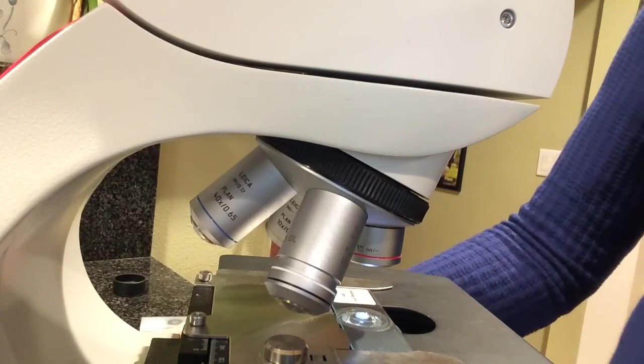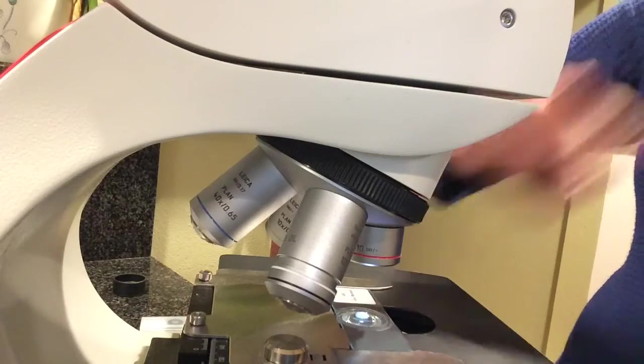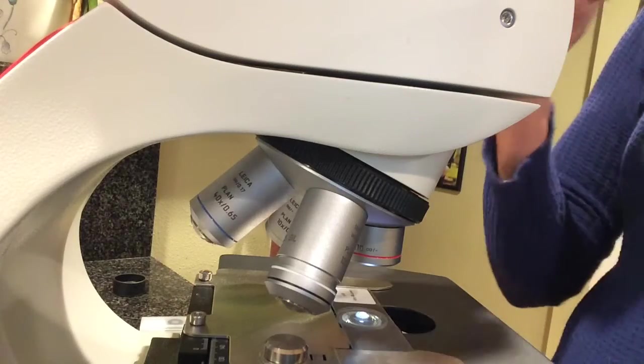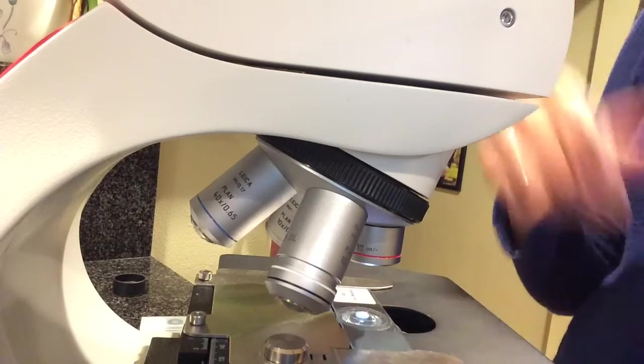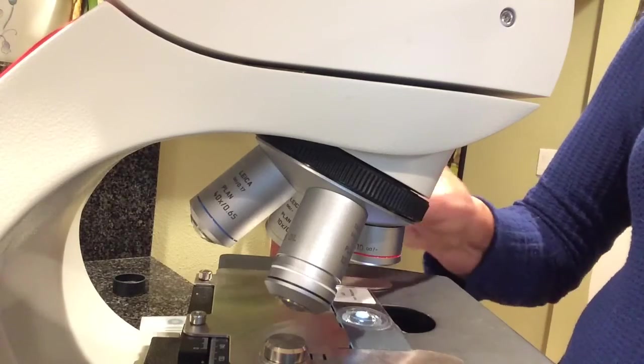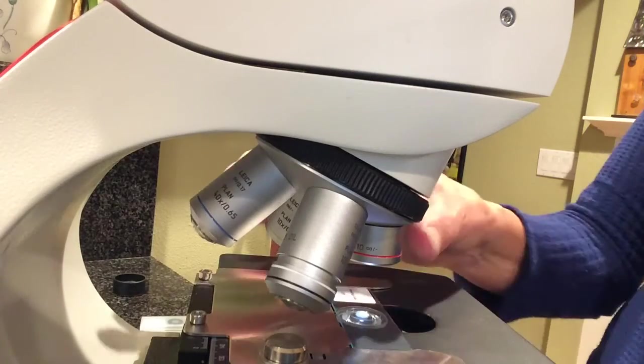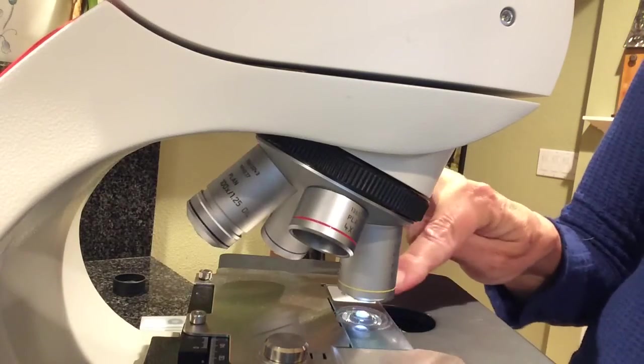And you want to make sure it's all focused under this power. So the smallest lens is 4x, and then times the eyepiece magnification which is 10, that'd be 40x, right? So you make sure it's in focus on this lens and adjust the condenser underneath if you need to adjust the light.